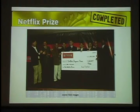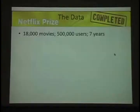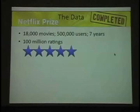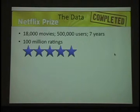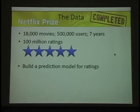What did they do to win their million dollars? Netflix made available a very large database: 18,000 movies, 500,000 users, over seven years — 100 million ratings, because if you rent a movie from Netflix you can log in and rate it one to five stars. They have ratings from all these different users on a whole bunch of different movies. On the basis of that, they have a recommender system — collecting this data so they can say "you should rent this movie next." They wanted to improve that system by building a prediction model for ratings.